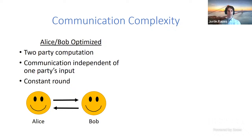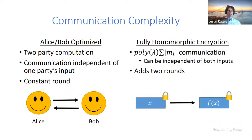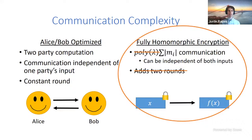Yao's original garbled circuit construction scales with the size of both inputs. Recent works studied Alice- or Bob-optimized protocols with communication independent of one party's input, but these are limited to two-party computation. Another approach is to compile an insecure protocol into a secure one using fully homomorphic encryption — communication is proportional to the insecure protocol but incurs a multiplicative polynomial blowup in the security parameter lambda.